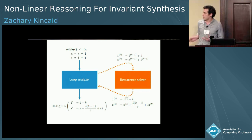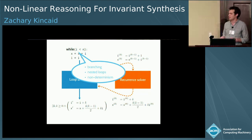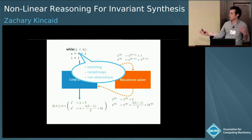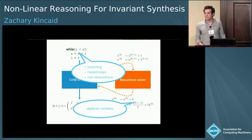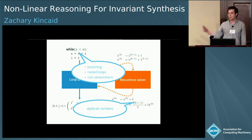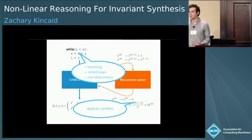There are two reasons this picture doesn't work out quite as nicely as it looks. The first is that loops might not just be a system of recurrences — they might involve control flow like branching and nested loops, or non-determinism. The second is that the output of recurrence solvers typically involves things like algebraic numbers, and there aren't a lot of tools in the program analysis toolbox that can reason about these.